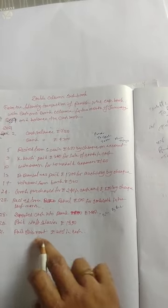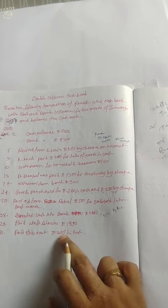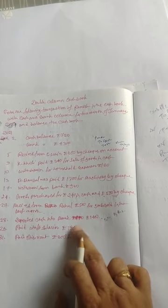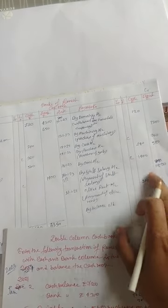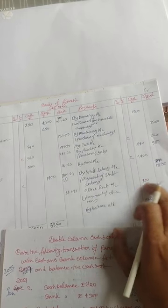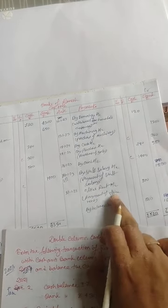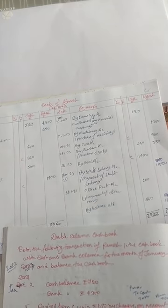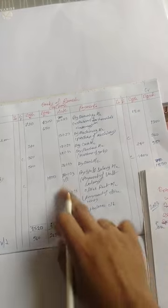Paid office rent rupees 200 in cash — cash is specifically mentioned here. Write 'By office rent account' with 200 in the cash column.